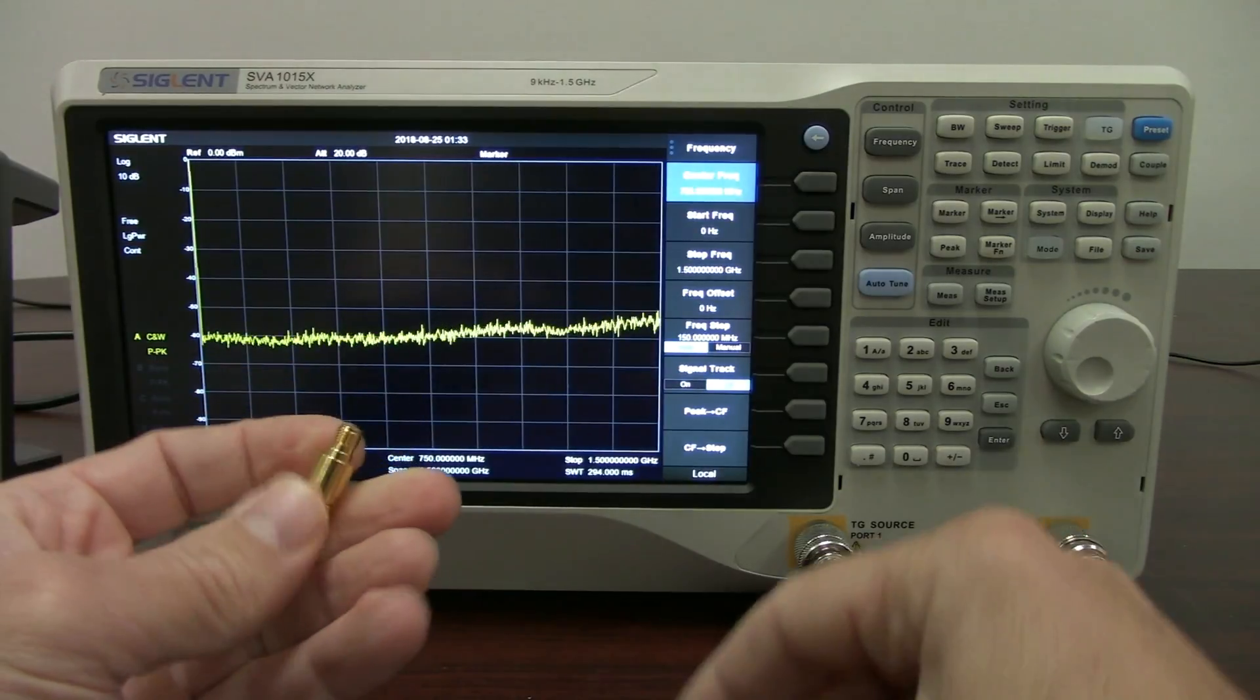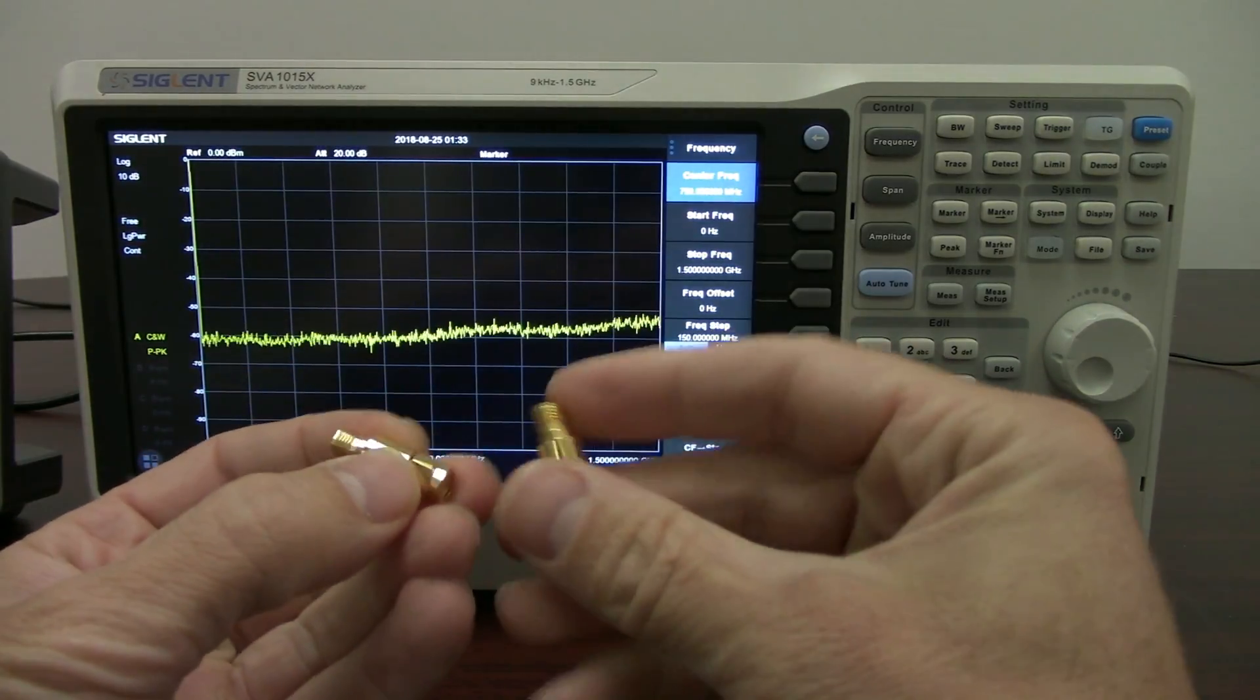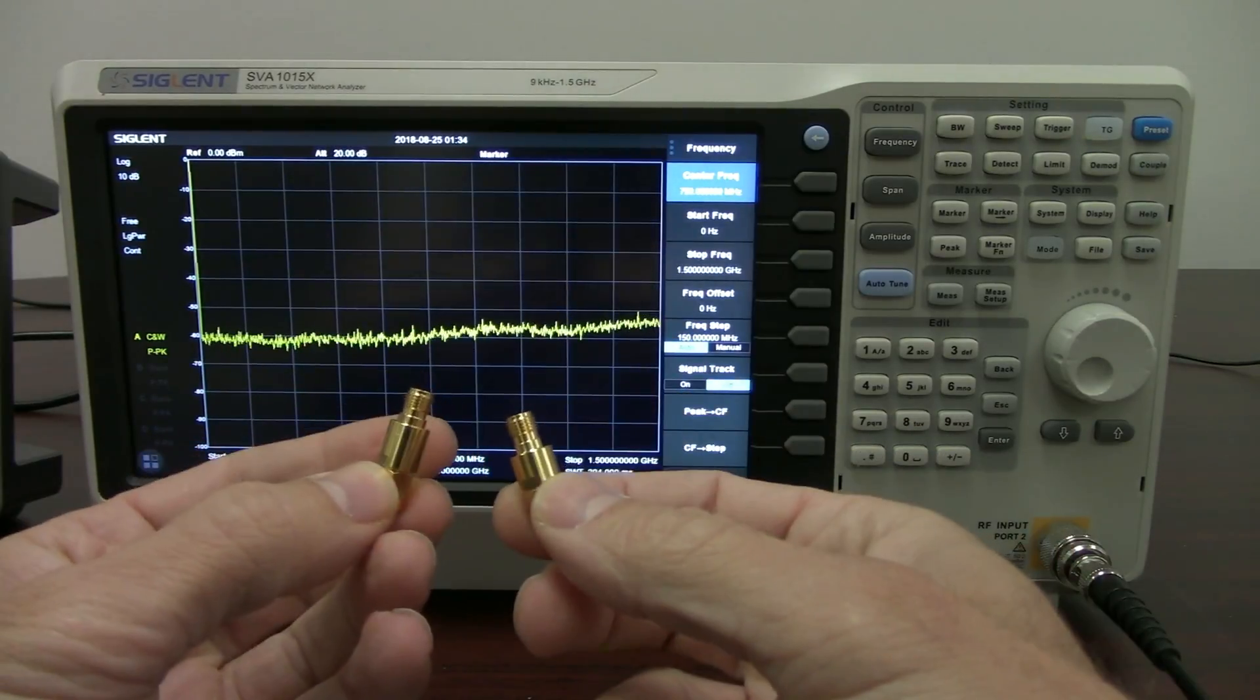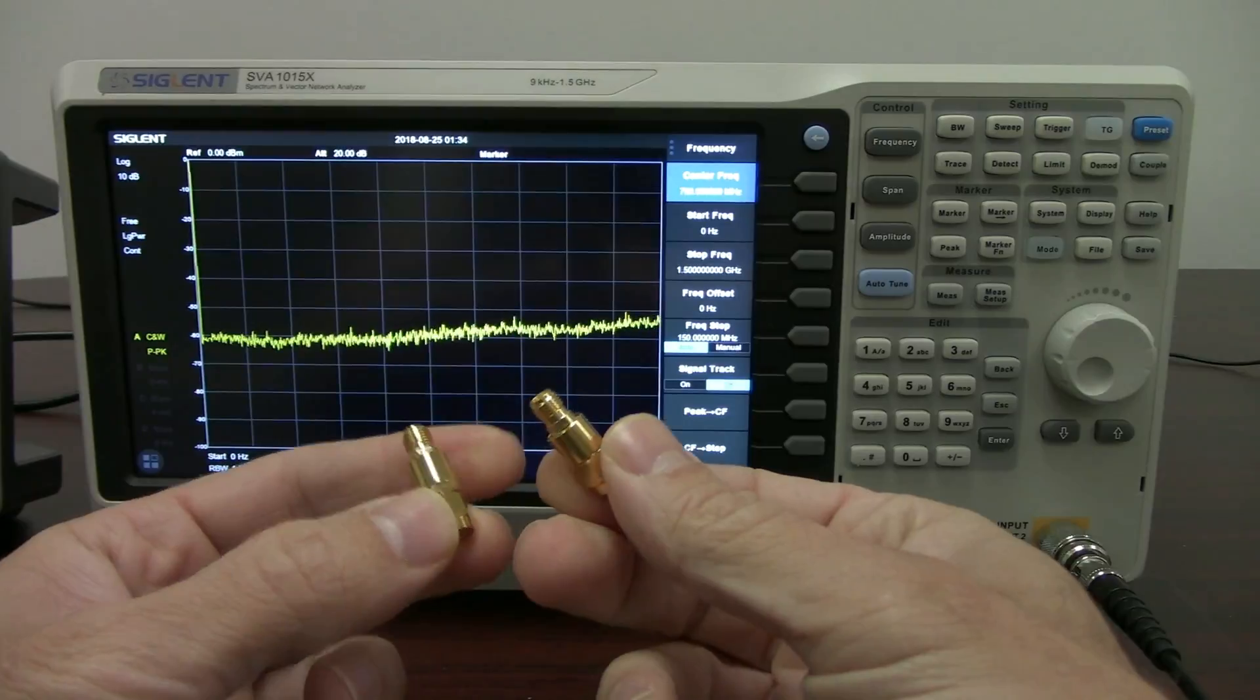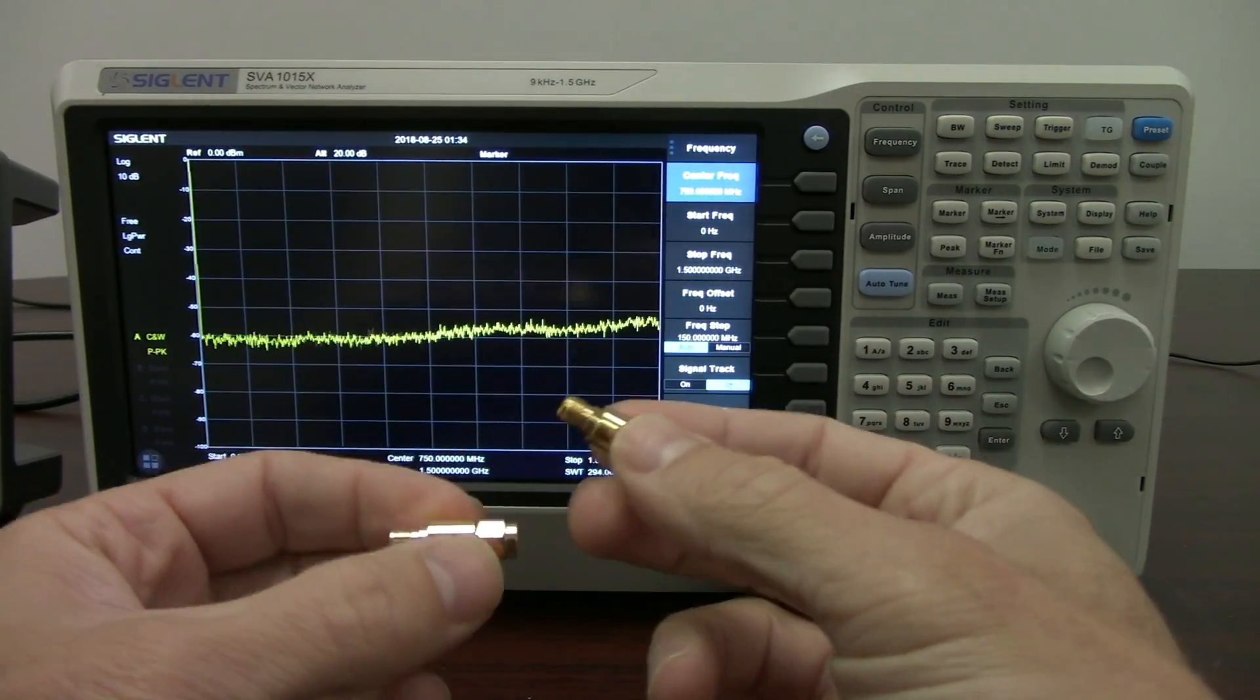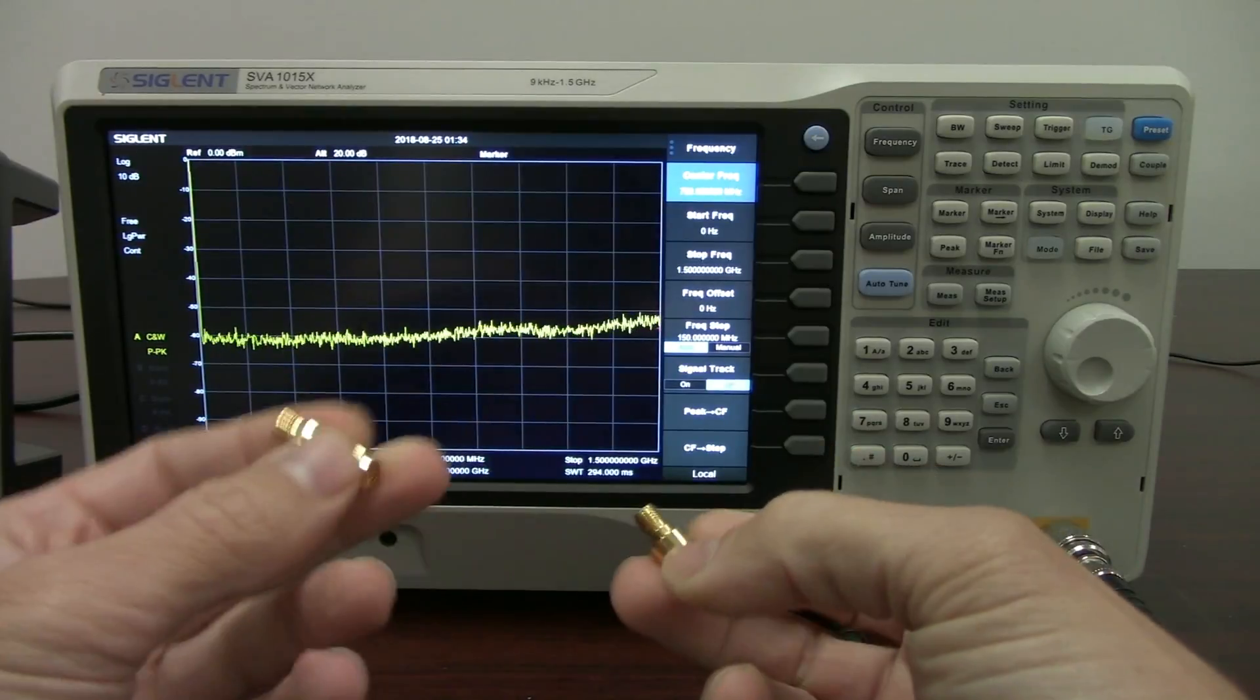Actually, two attenuators. I ordered some SMA attenuators. I ordered two different types, a 10 dB and a 20 dB, and they did not come labeled. So I'm going to use the SVA to help figure out which one of these is the 10 dB attenuator and which one's the 20.